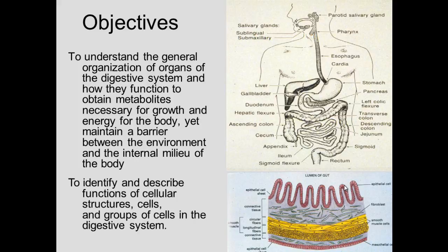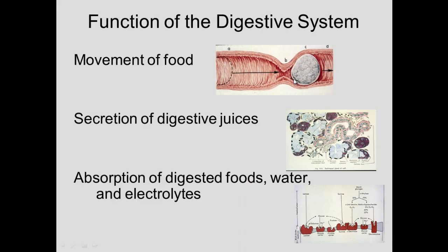We want to identify and describe functions of cells, cellular structures, and groups of cells in the digestive system. The digestive system starts with the oral cavity, esophagus, the stomach, down through the small intestine to large intestine, and a little bit about the appendix. Lining this tube is epithelium — mesothelium on the outside and epithelium on the inside, which includes absorptive cells in the gut or stratified squamous epithelium in the esophagus and oral cavity.